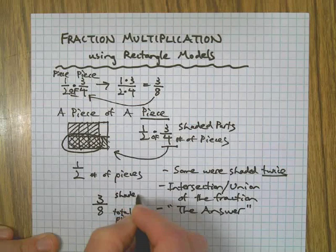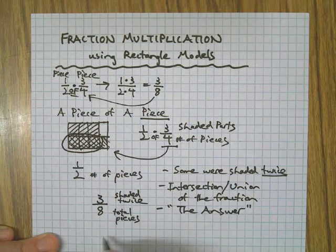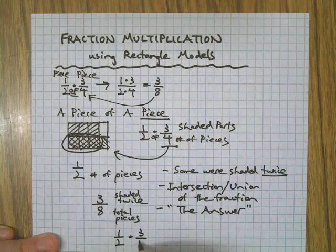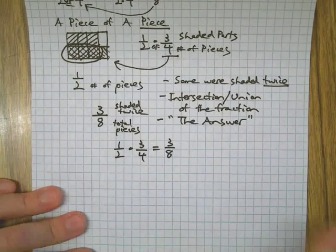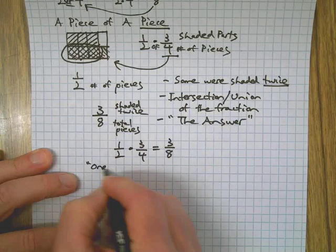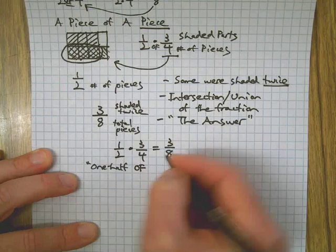So let's put it all back together. One-half of three-fourths is three-eighths. And this is how you would say it: there's the word 'of,' there's the word 'of' that tells you to multiply.